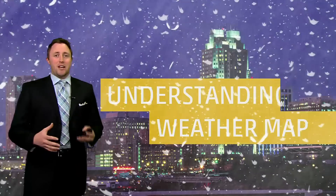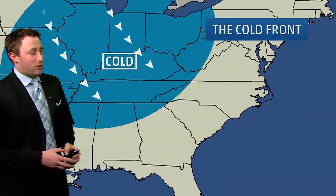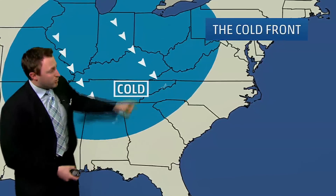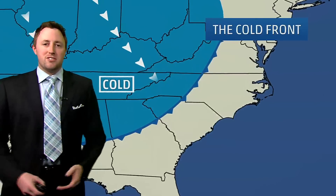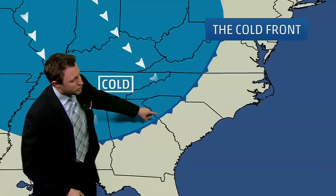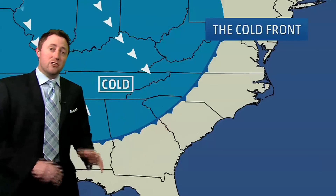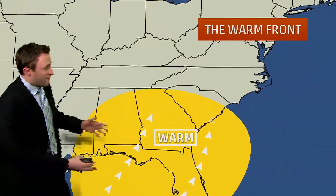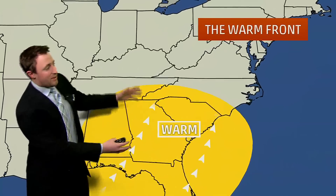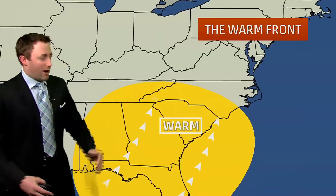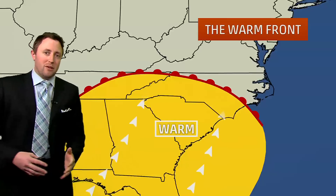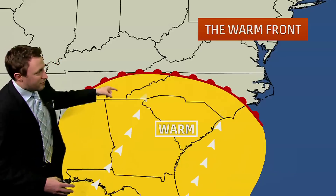First we're going to talk about understanding what goes on in a weather map. We've got cold air, and as it pushes further to the south, along the leading edge of where that cold air is advancing is where we set up a cold front. That's going to be this blue line here with all these triangles, and they point in the direction the cold front is moving. On the other side we have a warm front — when you have a mass of warm air moving northward, the leading edge of that warm air mass is where we draw the warm front, which is going to be the little red line with the half circles.